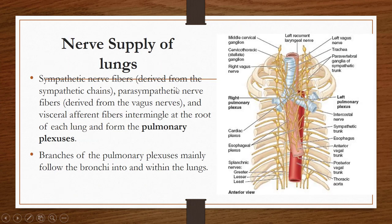Now for the nerve supply of the lung, there are sympathetic and parasympathetic nerve fibers. In all organs, parasympathetic fibers are derived from the vagus nerve, which is the 10th cranial nerve and the longest cranial nerve in the body. Sympathetic nerve fibers are derived from the sympathetic chain, which is present on both the right and left sides.